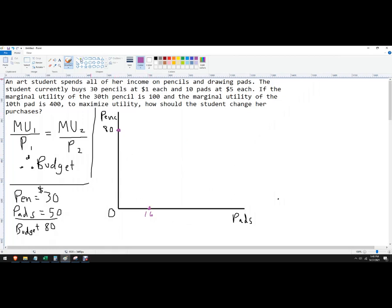We can also do any combination in between. So this is our budget constraint given our current budget or the amount of money that this art student has to spend. They can spend all of their money on pencils, all of their money on pads, or somewhere in between.